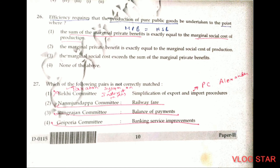Question number 26. Efficiency requires that production of pure public goods be undertaken to the point where the sum of marginal private benefit is exactly equal to marginal social cost of production. In the case of public goods, production should be at the point where marginal private benefit equals marginal social benefit. Question number 27. The first option is not correctly matched — the Rekhi Committee dealt with indirect taxation, while simplification of export and import procedures was given under the PC Alexander Committee. The other three are correctly matched: Nanjundappa Committee on Railway Fares, Rangarajan Committee on Balance of Payments, and Goiporia Committee on Banking Service Improvements.